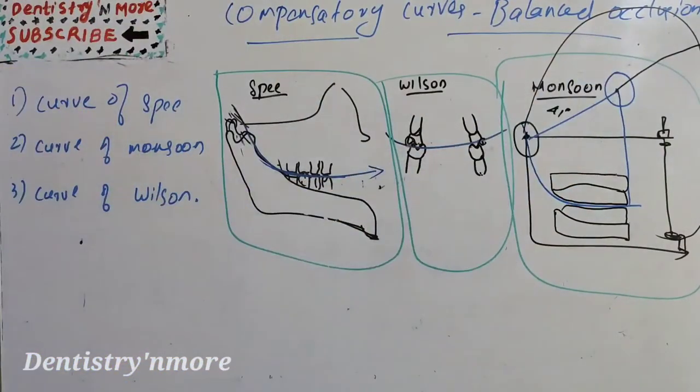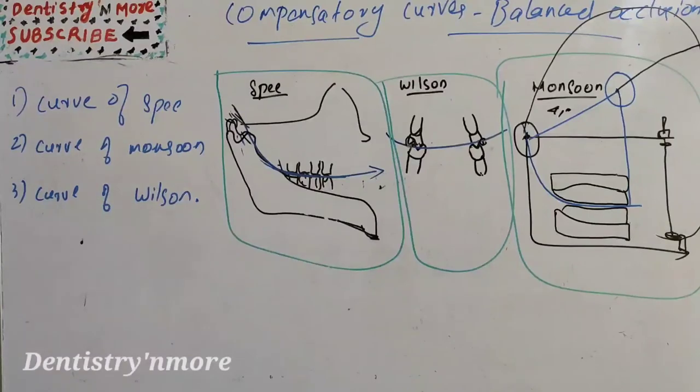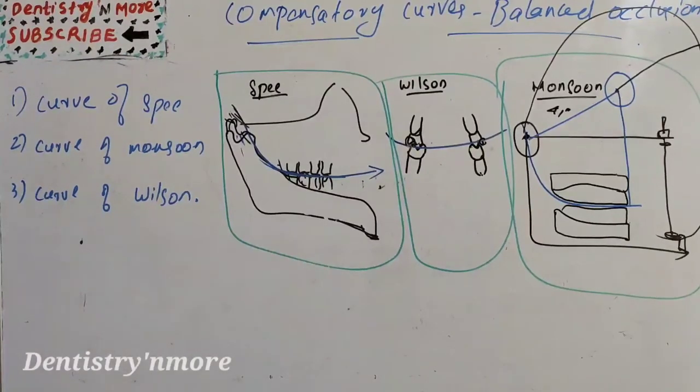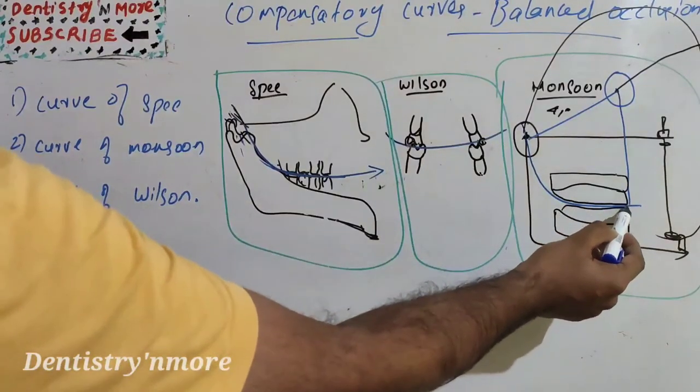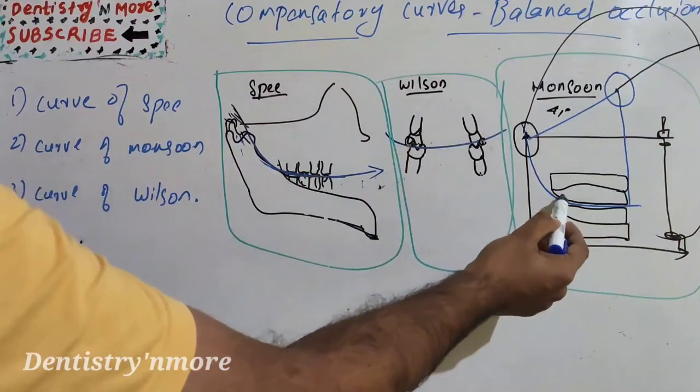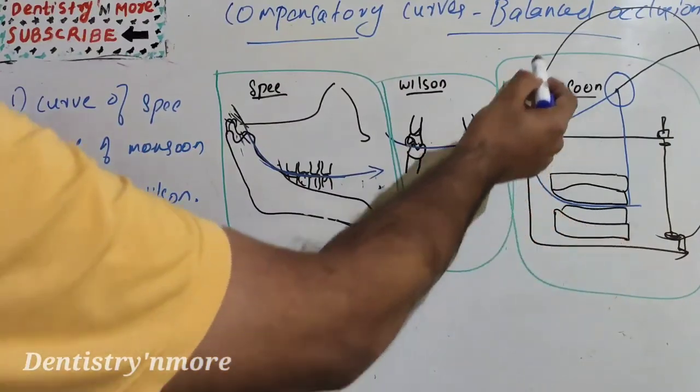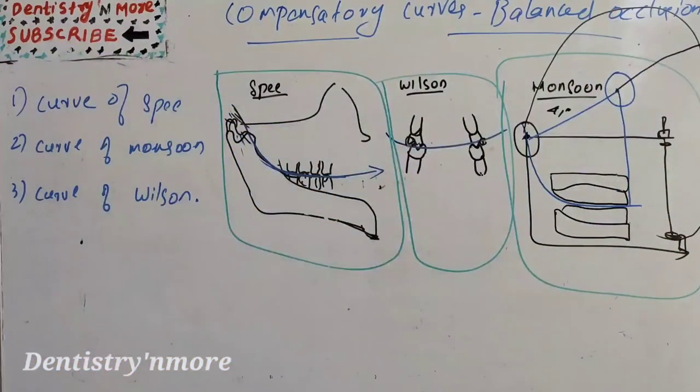The concept is such that the curve of occlusion in which each cusp and incisal edges touches a segment of a surface of a sphere. So all the cusp tip and incisal edges touch the sphere. The sphere means a sphere of 8-inch radius with the center at glabella.